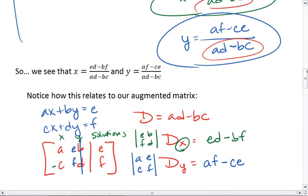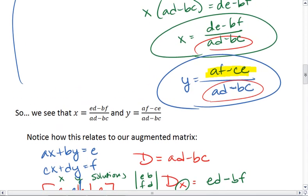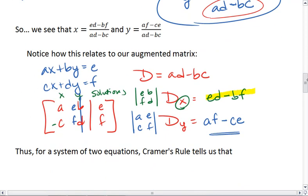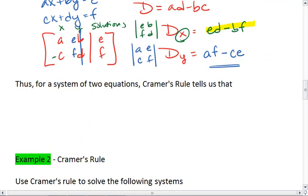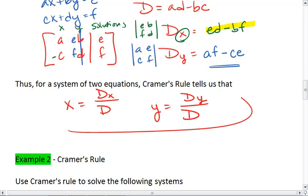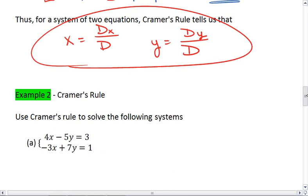Well, notice above, AF minus CE is the numerator of solving for y, and ED minus BF is the numerator of solving for x. So what Cramer's rule tells us is that we can solve for x by finding the determinant with respect to x over the determinant, and we can solve for y by finding the determinant with respect to y over the determinant in general. And let's give an example to give a context.